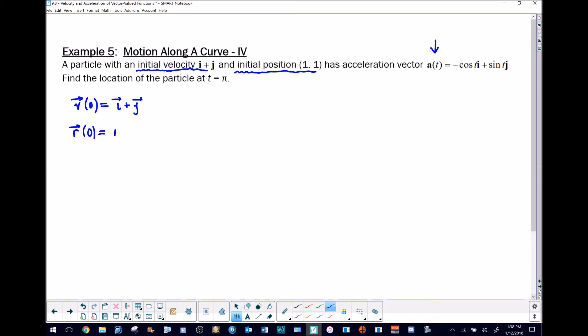The initial position being at point (1,1) means the position vector is also i plus j. You might wonder, wait, this didn't say i plus j, but when you're talking about being located at point (1,1), the vector associated with that looks like that. We're good to go on our initial conditions.